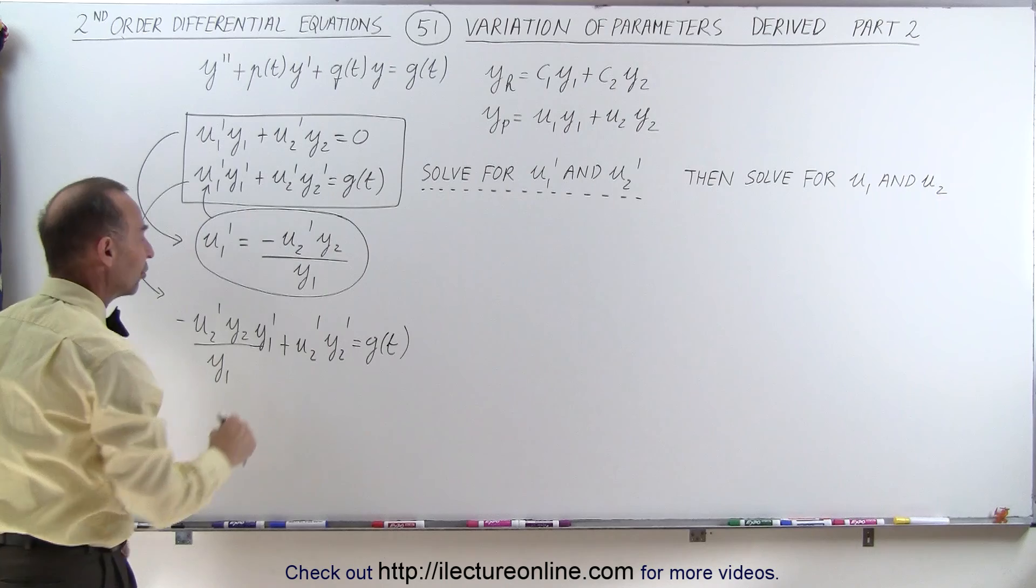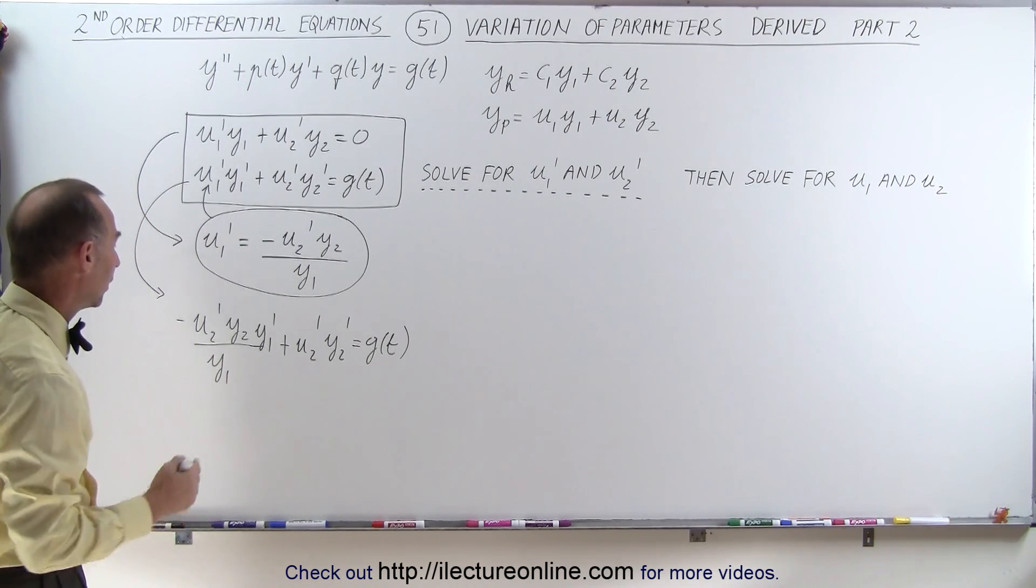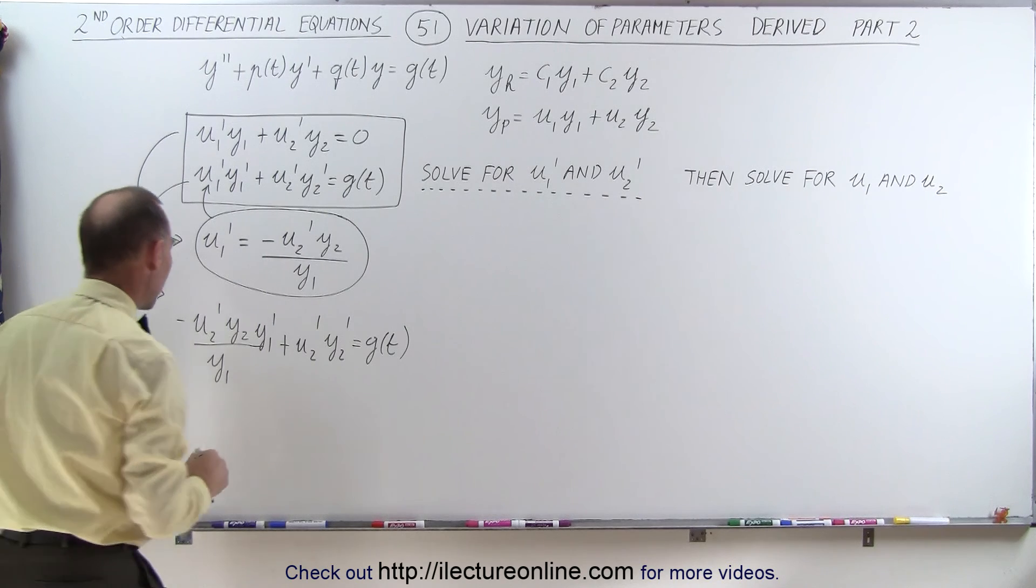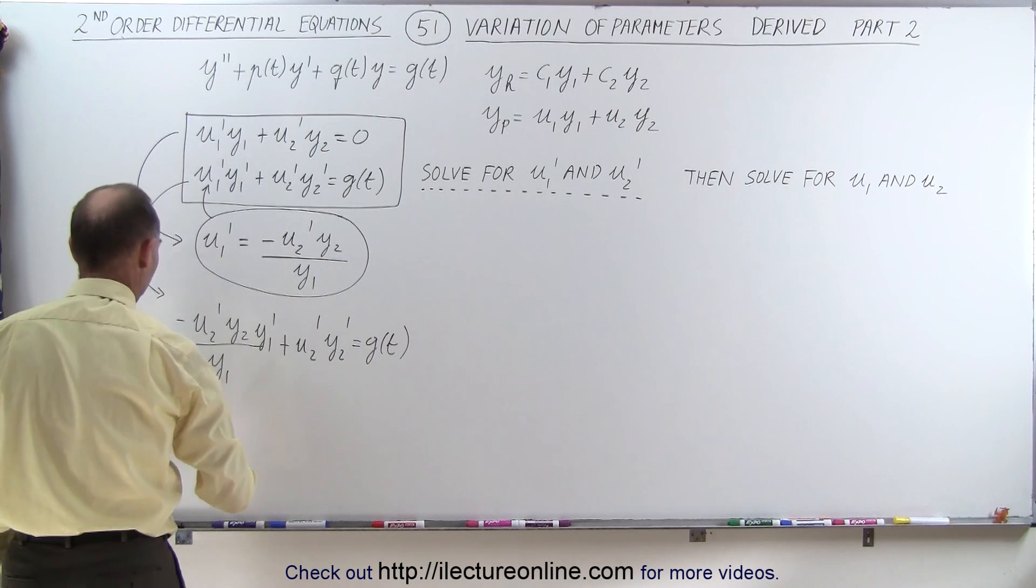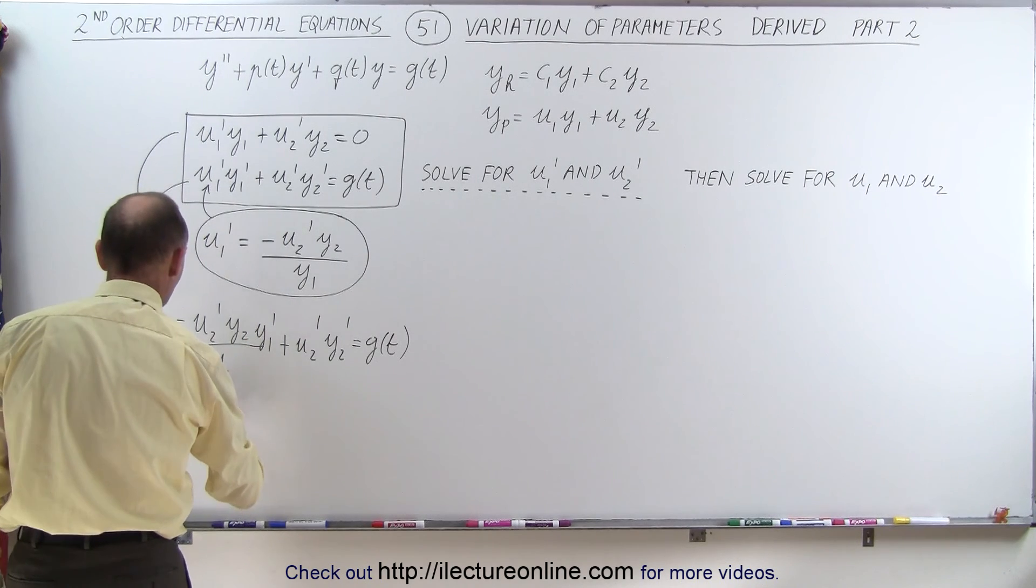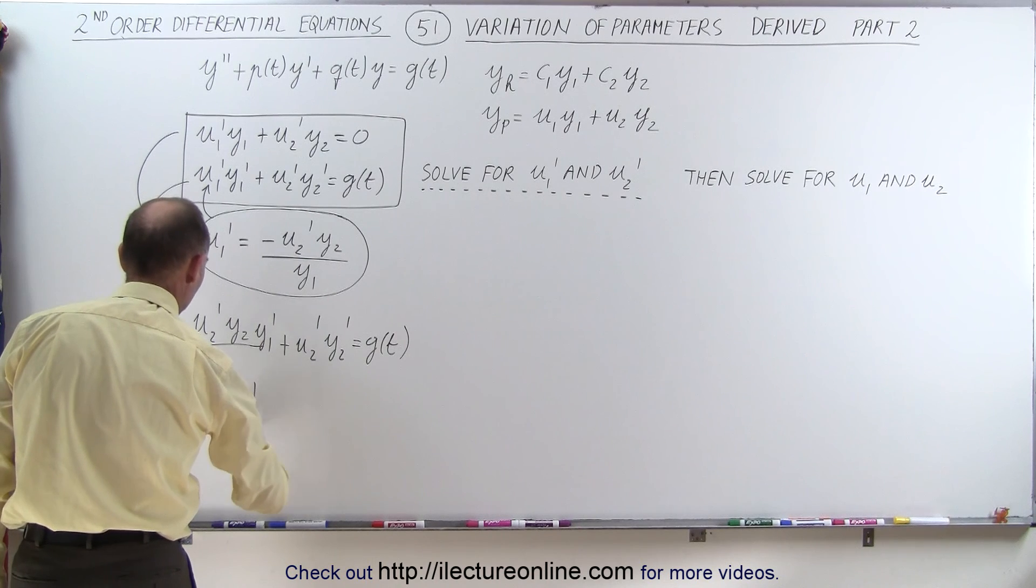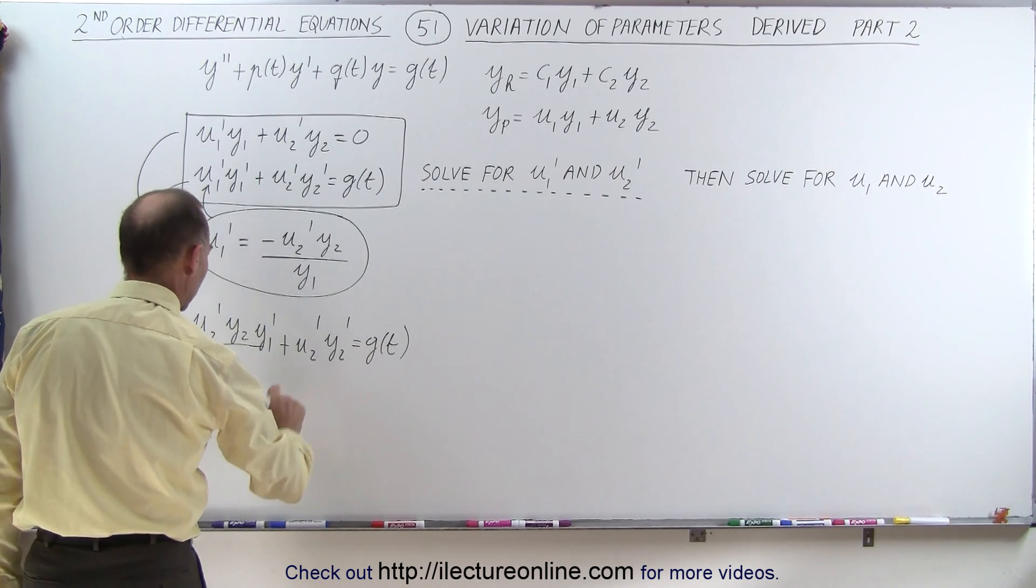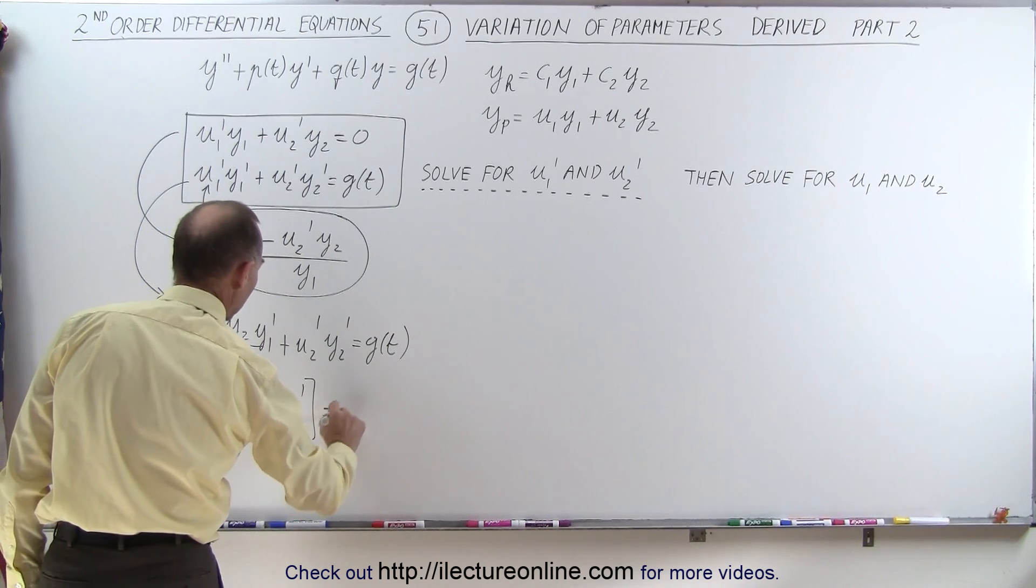So notice we now have an equation that only has u2'; u1' has been eliminated. So we're going to factor out a u2', so that gives us u2' times what we have left here. We have a minus y2 y1' divided by y1, and here we have plus y2', and that equals g of t.